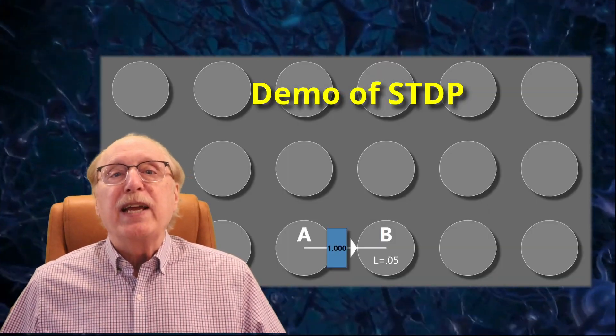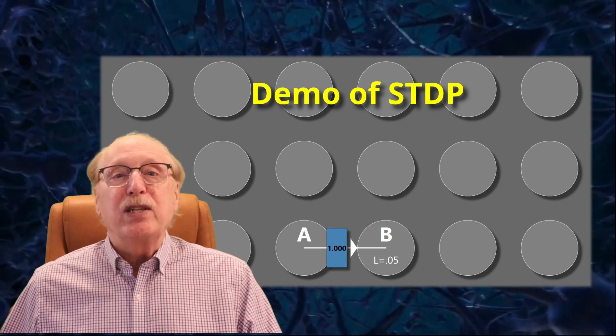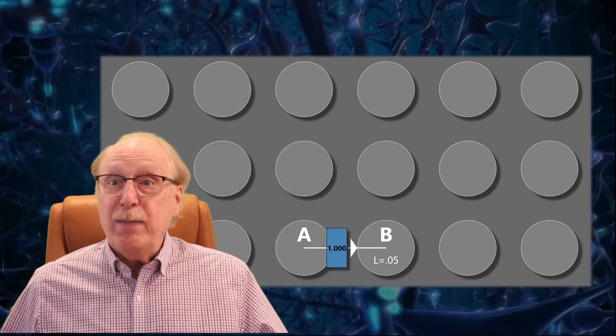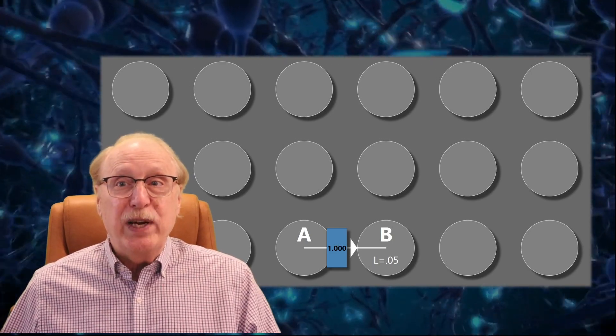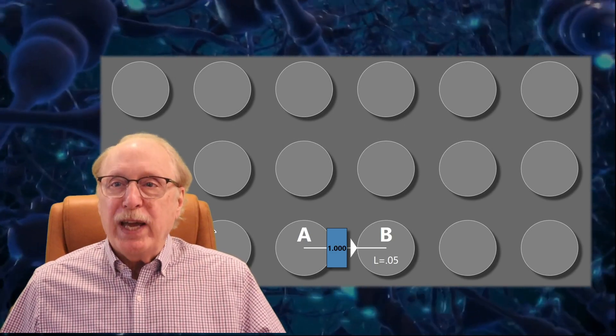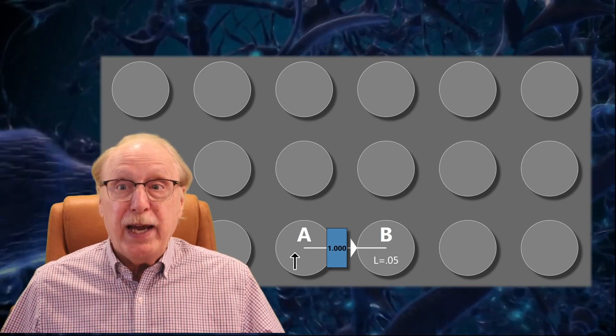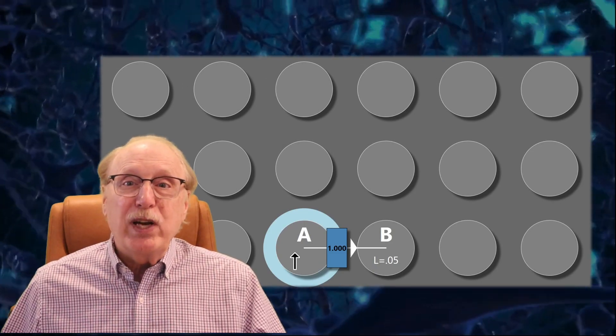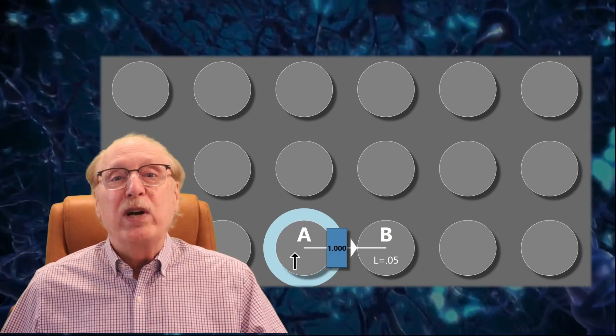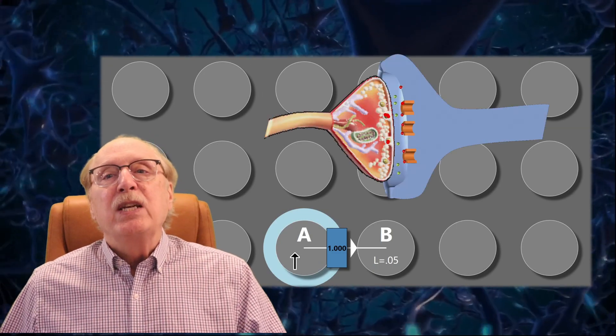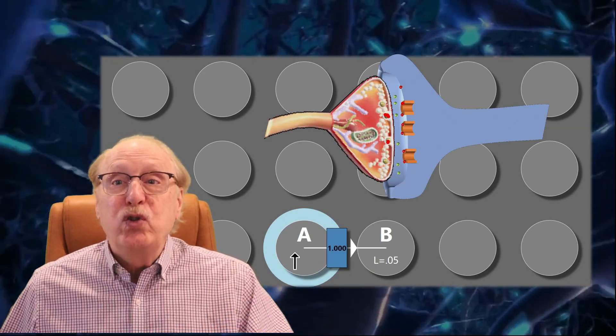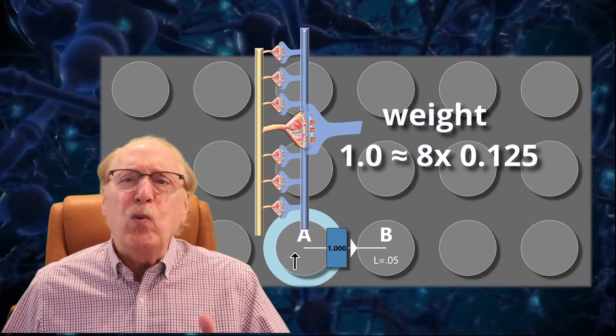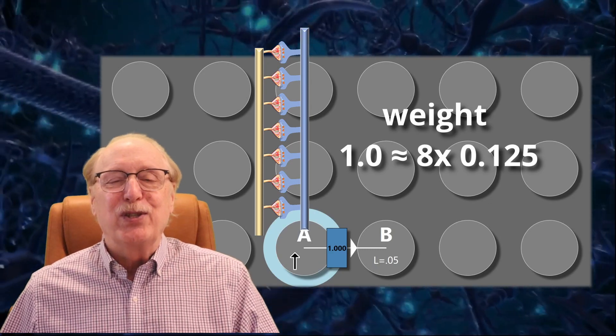To more clearly illustrate the action of a Hebbian synapse and its limitations, let's simulate two neurons labeled A and B connected by a Hebbian synapse which currently has a weight of 1. You can see that if I fire neuron A, neuron B fires shortly thereafter. Since the synapse weight is already 1, the weight remains unchanged. Since actual weights do not exceed 0.15, we'll say that my synapses of weight 1 represent 8 synapses in parallel.